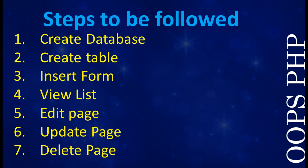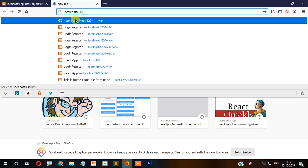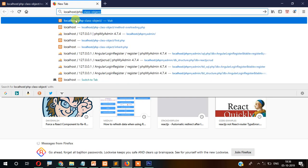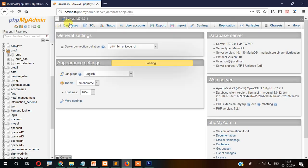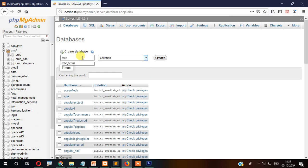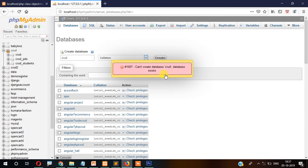First, let's create the database. I assume you know how XAMPP works and have already installed it, and MySQL is already installed with XAMPP. So let's open phpMyAdmin — go to localhost/phpMyAdmin — and then click on 'Database' and create a database called 'crud', then click Create.